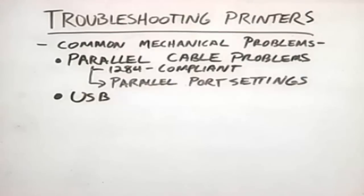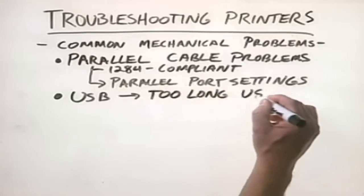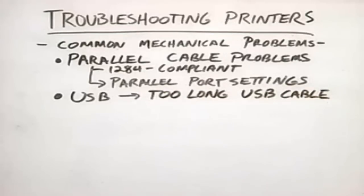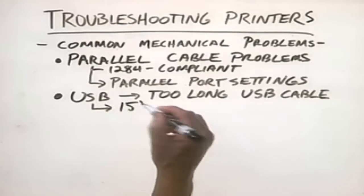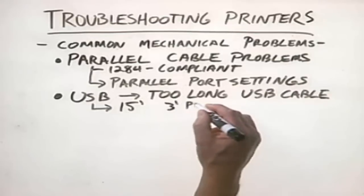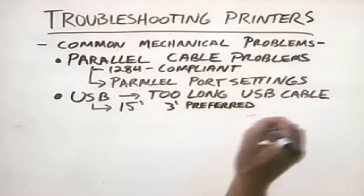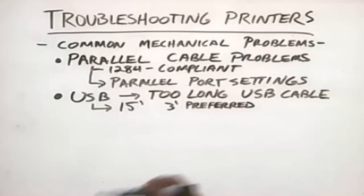If you're dealing with a USB printer, you won't have as many cable connection problems as with parallel printers. The one thing you do have to watch out for, however, is a USB cable that is too long. There are some USB cables floating around that go beyond the standard allowed length. A general rule of thumb is don't let your USB printer cables get over around 15 feet — and even that, in my opinion, is too long. I would keep that cable down to around 3 feet. The shorter the cable, the less crosstalk you'll get, the better the signaling, and the better your performance will be.